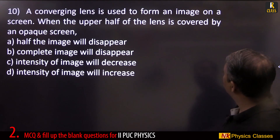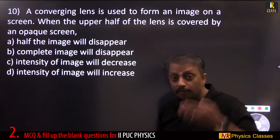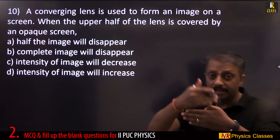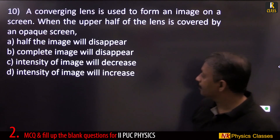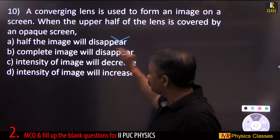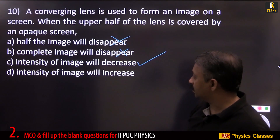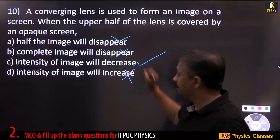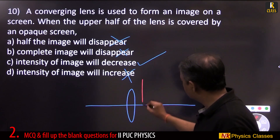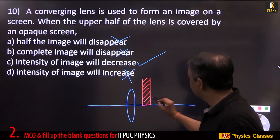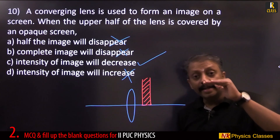A converging lens forms an image on a screen. When the upper half of the lens is covered by an opaque screen, the intensity of the image decreases — the complete image is still formed, not half of it. Half of the image does NOT disappear; only intensity decreases.